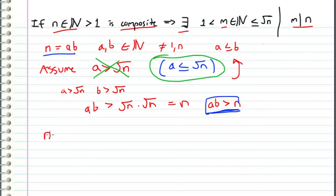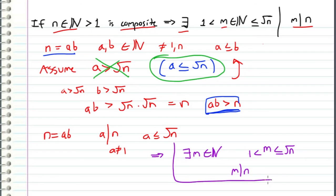So since n is equal to ab, this means that a divides n. And we've also showed that a is less than or equal to the square root of n through contradiction. And since n is composite, we know that a does not equal 1. Therefore, we can conclude that there exists an integer m in the natural numbers that is greater than 1 and less than or equal to the square root of n, such that m divides n. And in this case, m is equal to a.